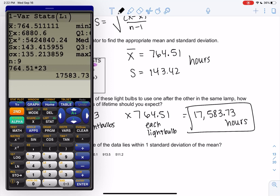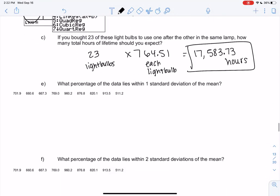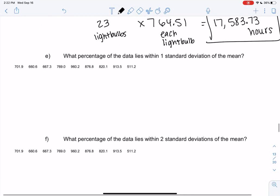Times 23, so we would expect it to last 17,583.73 hours if we had 23 light bulbs back to back. And then I just copied the data down so you can see the data when I zoom in.